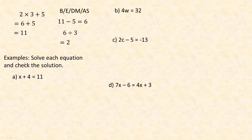Let's look at these examples. Solve each equation and check the solution. First: x plus 4 equals 11. This means some unknown number that we're adding 4 to gives 11. Many simple equations you can solve by inspection using your number facts — you might say, I know what number I add 4 to to get 11, it's 7. That's a good way to unofficially check your answer.